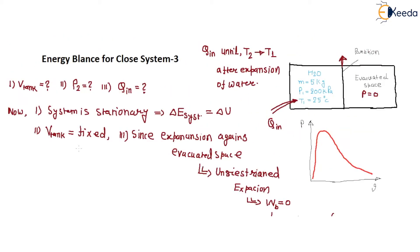We take the entire container as the system. This is a closed system — there is no mass transfer. Initially, the water in the tank exists as compressed liquid. That is state 1: compressed liquid.